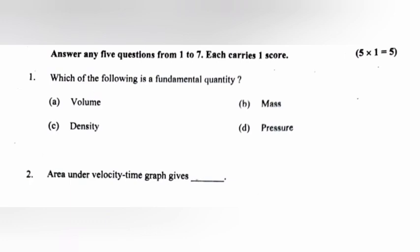Question 2: Area under velocity time graph gives dash. Answer: Displacement.